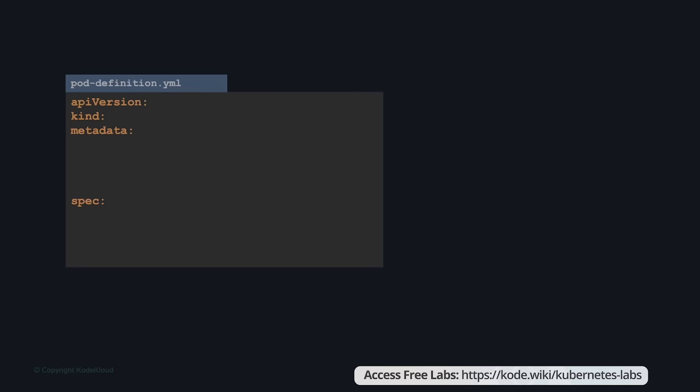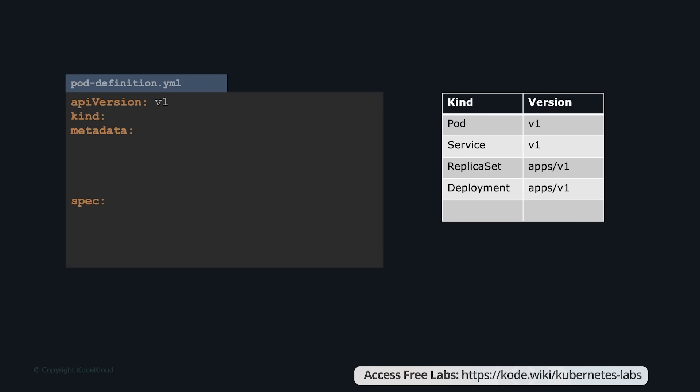The first field is the API version — the version of the Kubernetes API we're using to create the object. Since we are working on pods, we will set the API version as v1. For services, replica sets, or deployments, you will use the versions listed in the documentation. The next field is kind — this refers to the type of object we are creating, which in this case is a Pod (with a capital P, since it is case-sensitive). Other possible values include ReplicaSet, Deployment, or Service. Some other possible values are ReplicaSet or Deployment or Service.